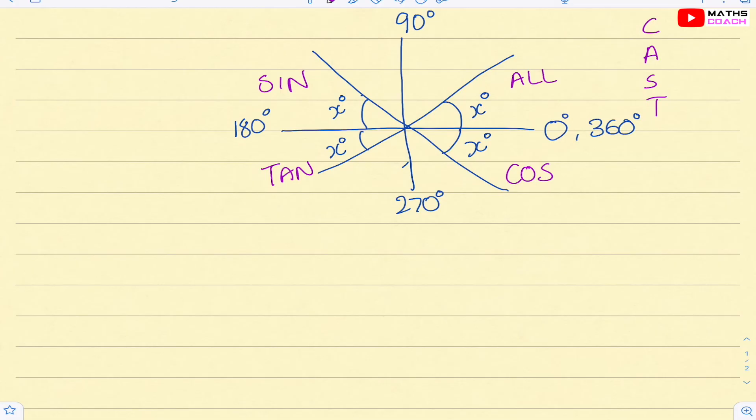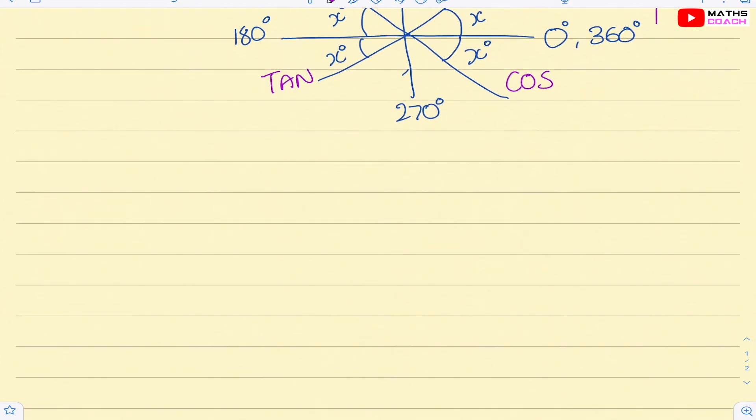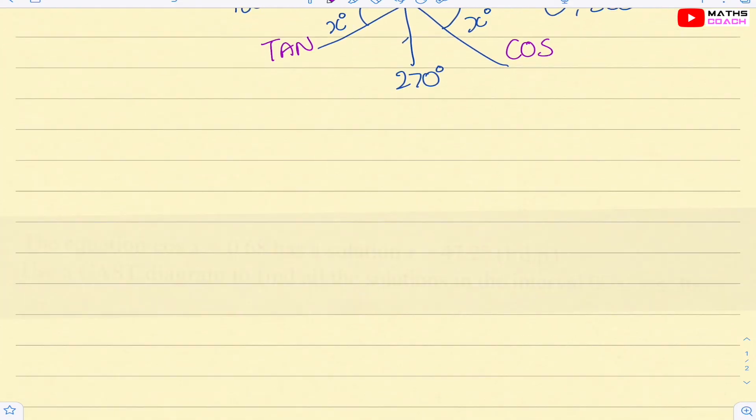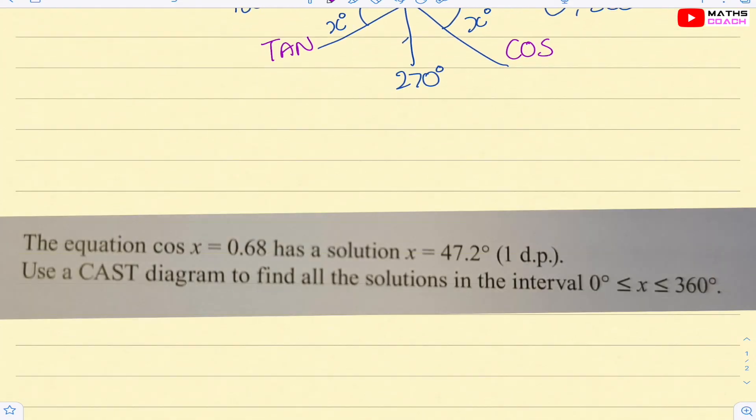So how do we actually use this to solve equations? So we have, for example, the equation cos x equals 0.68 has a solution x equals 47.2 degrees to one decimal place. Use the CAST diagram to find all the solutions in the interval 0 to 360.